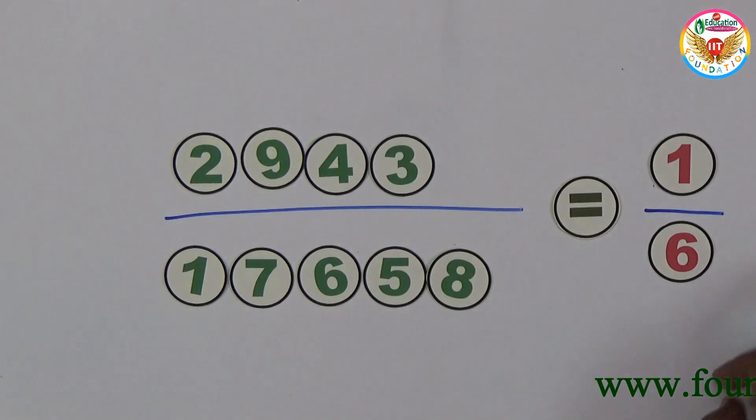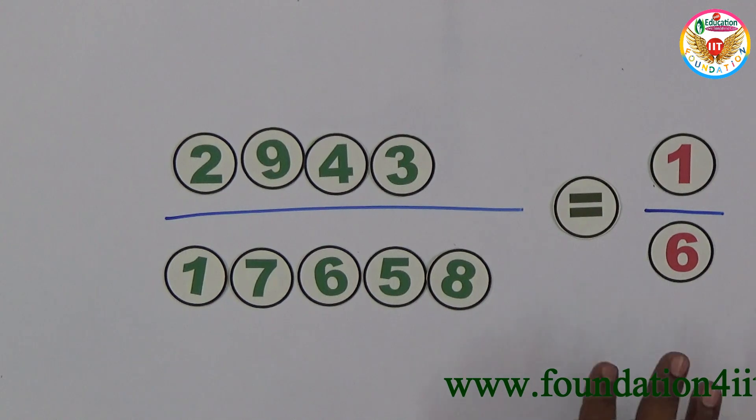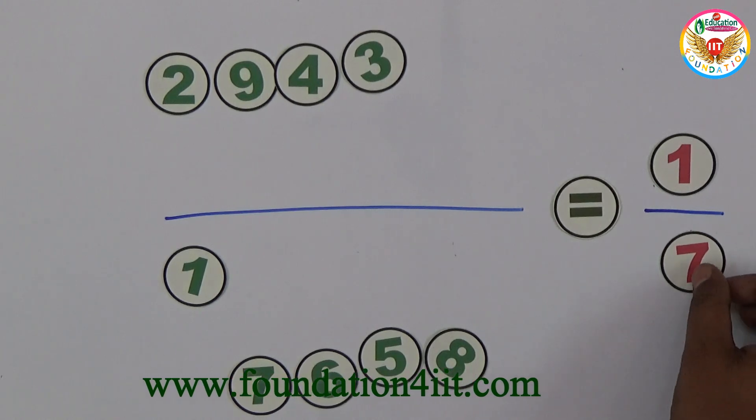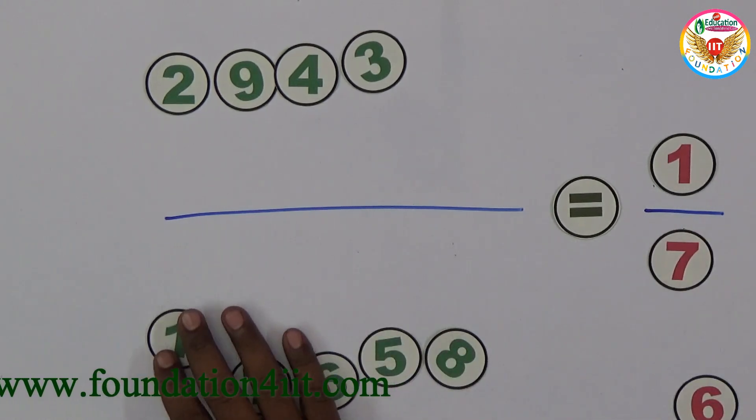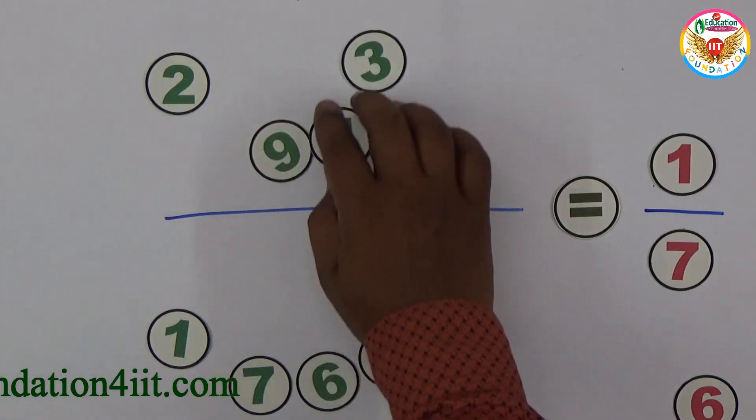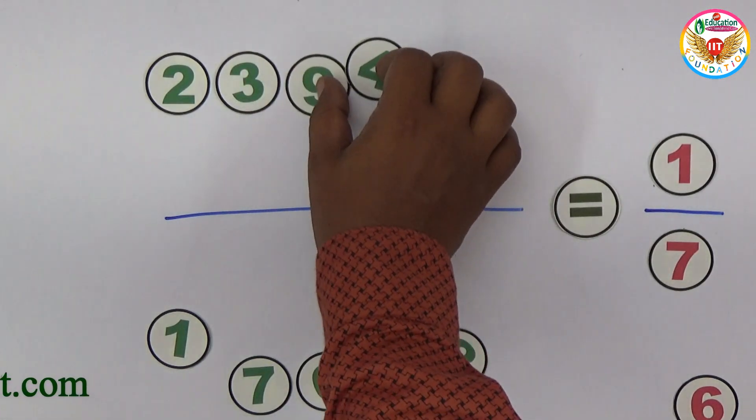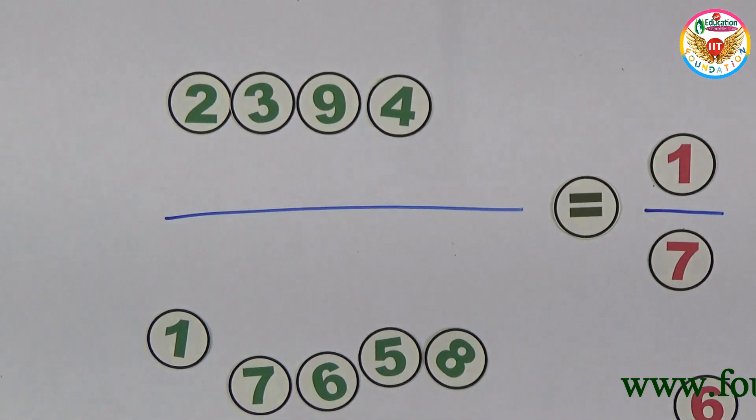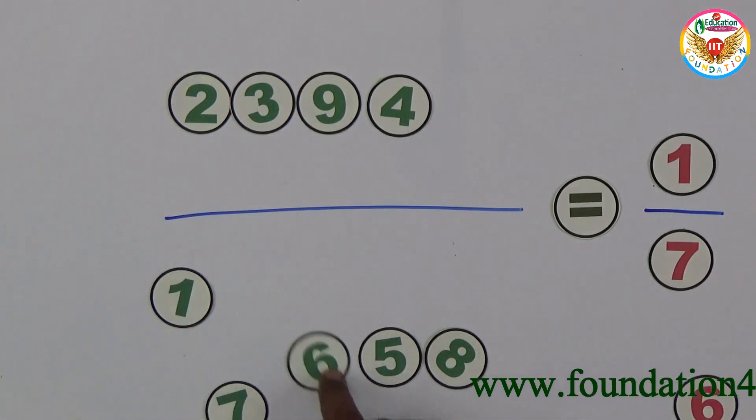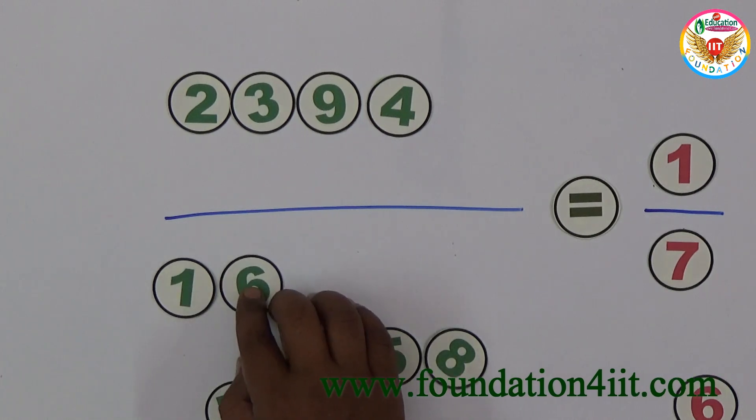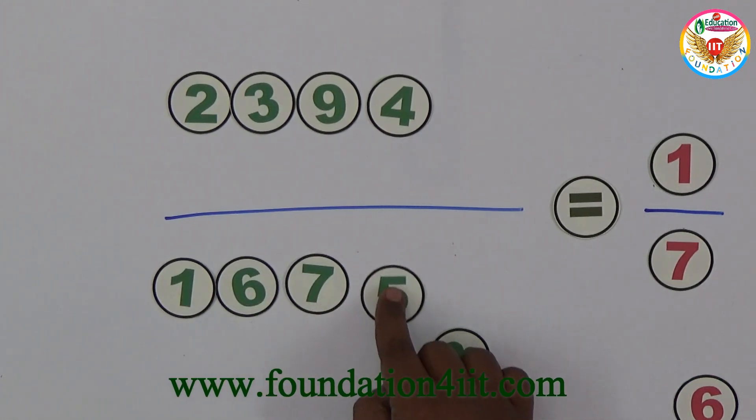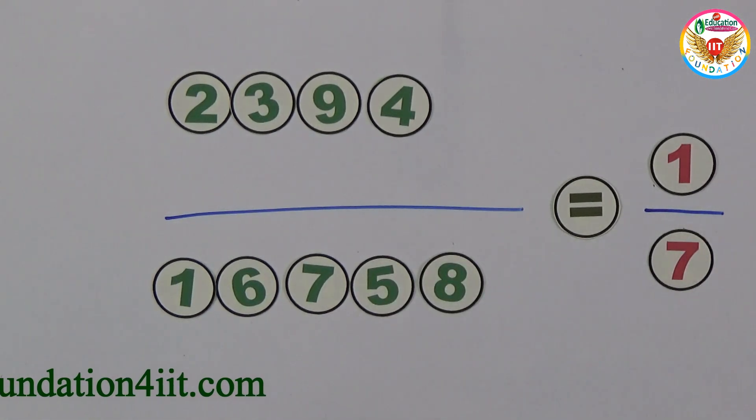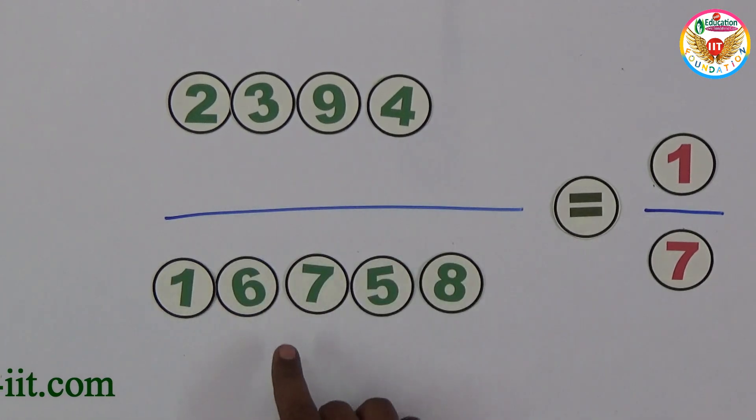These are the solutions to get 1/6. For 1/7, this is 7 times should be denominator, so that is 2394 divided by 16758. This value is exactly equal to 1/7, so 2394 by 16758 is 1/7, and every digit is used only once.